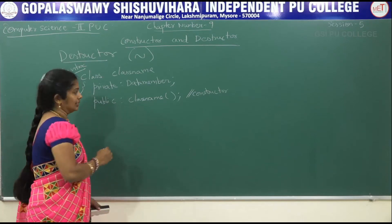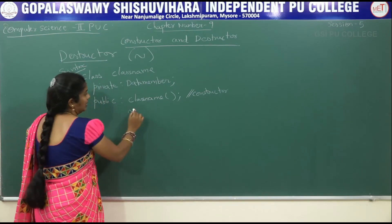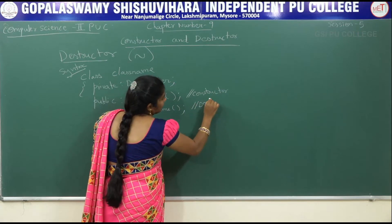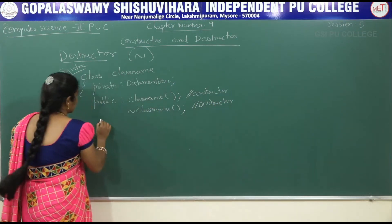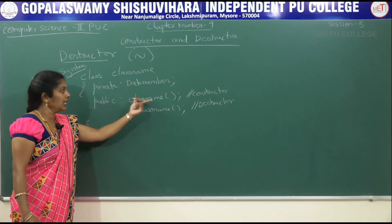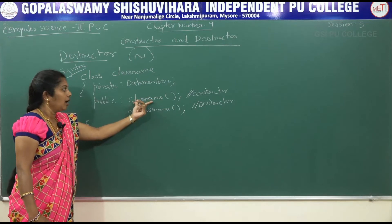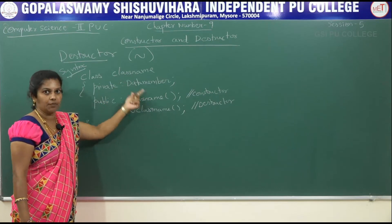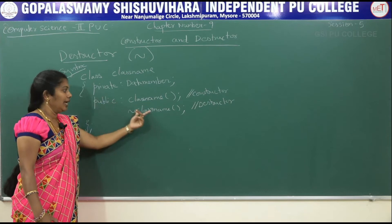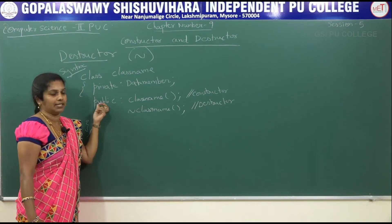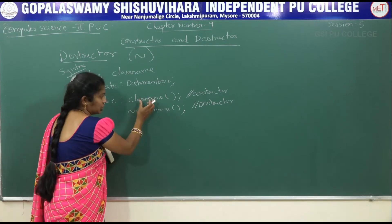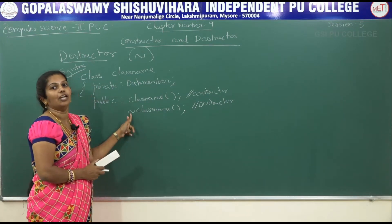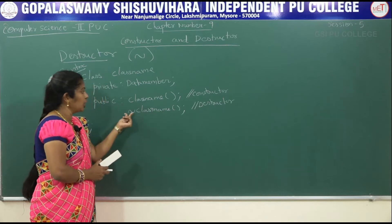To write the Destructor, it follows the same pattern — tilde operator followed by the class name again. Both the Constructor and Destructor share the class name as the function name, and both are declared in the public section. The difference is that the Destructor is preceded by the tilde (~) operator.